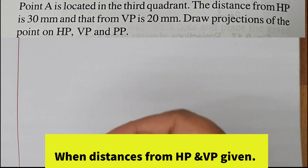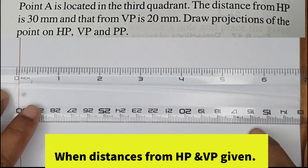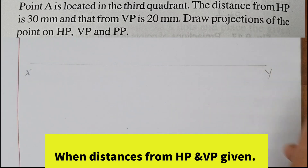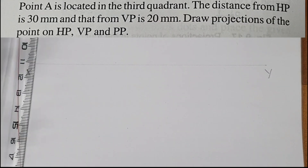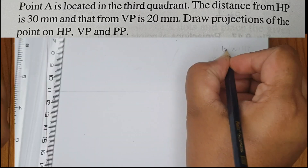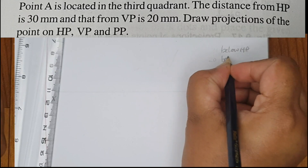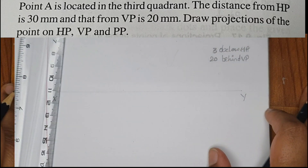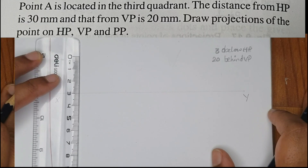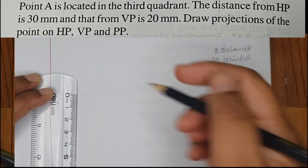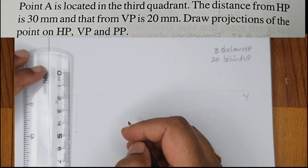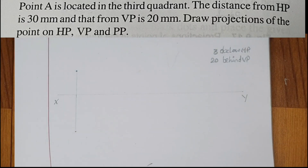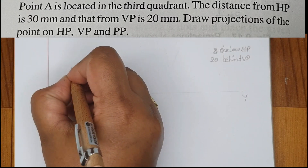We will start the points. That's why we will go to the XY line. Okay, X, Y. Next — point distance from HP and distance from VP. Now the third quadrant is below and behind. These conditions are the same. VP related is 20 mm, HP related is 30 mm. 30 below — front view. The name is small a prime. The top is small a.